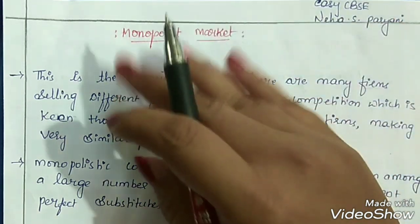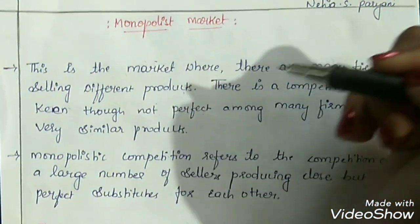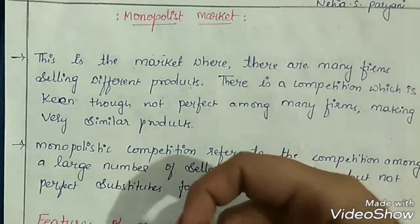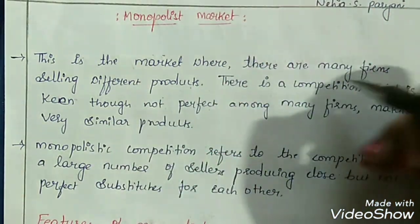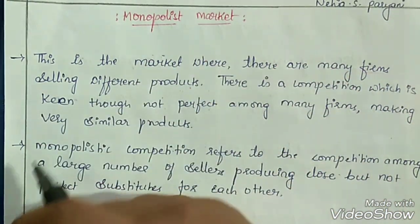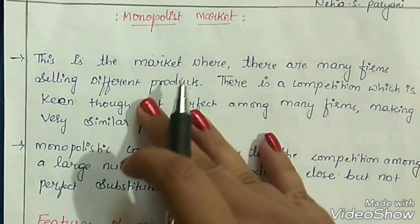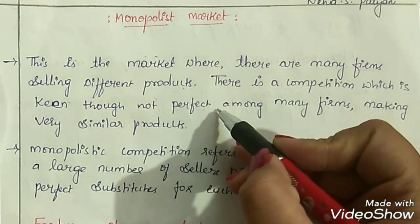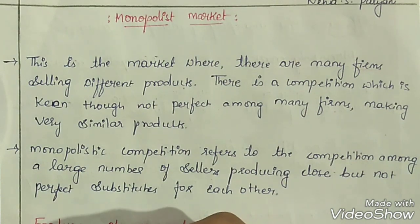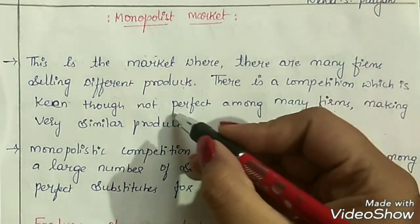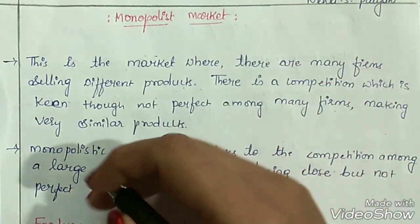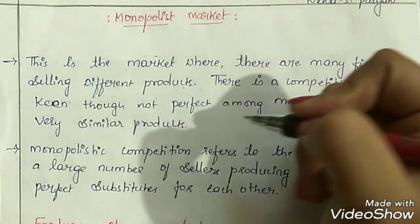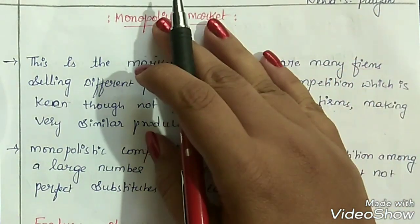So today we will discuss about monopolistic market. As I told you earlier, it is a form of imperfect competition market. This is the market where there are many firms selling different products. In the monopoly market, we had a single seller or single firm selling the goods. But here in this type of market, we have many firms which are selling different products. The products are not homogeneous in nature — they are different from each other. It may be in terms of quantity, quality, or price. There is competition which is keen, though not perfect among many firms. We cannot call it a perfect competition because they sell different products — the products are not homogeneous in nature. That is the reason why it is called an imperfect competition market.